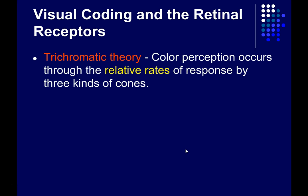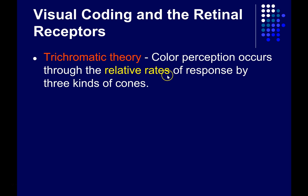Let's start with the trichromatic theory. The word trichromatic refers to three colors — chroma is color, tri is three — and this theory says that our color perception occurs through the relative rates of response, the ratio of activity, across three kinds of cones.